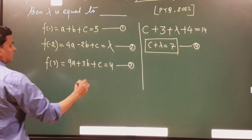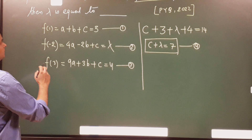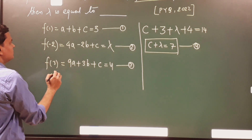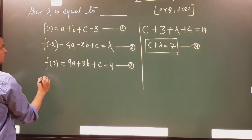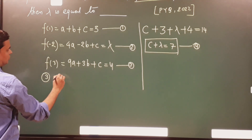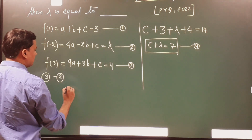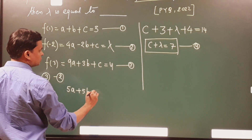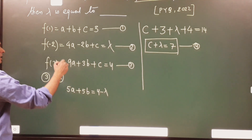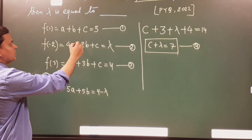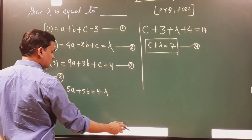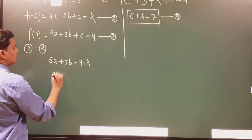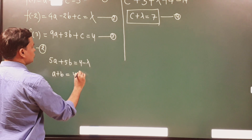From here, if I subtract any two of the equations, I will get rid of c because everywhere it is written simply c. I am doing the operation equation 3 minus equation 2: 5a + 5b = 4 - lambda. From here I can extract the value of a + b: a + b = (4 - lambda) / 5.